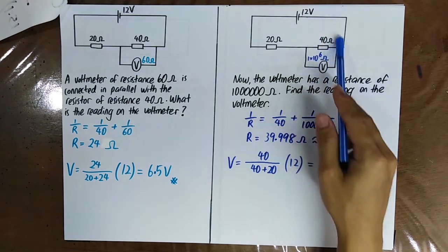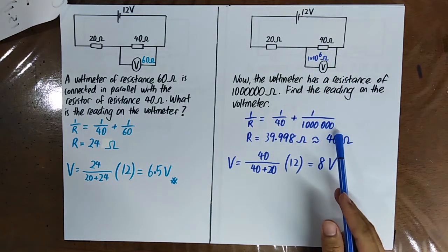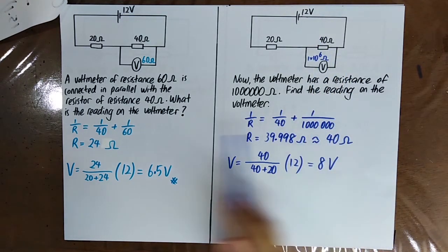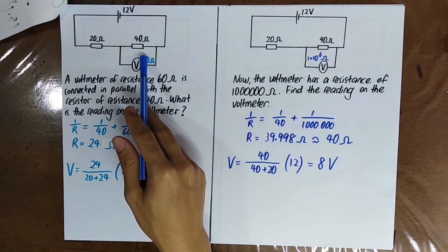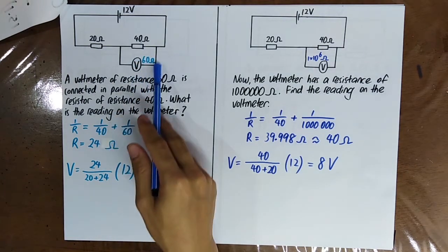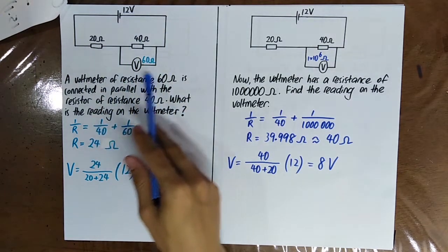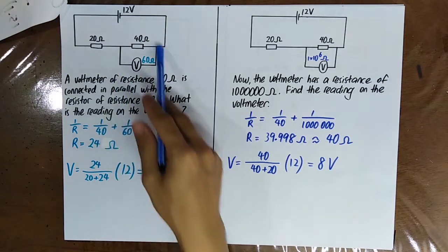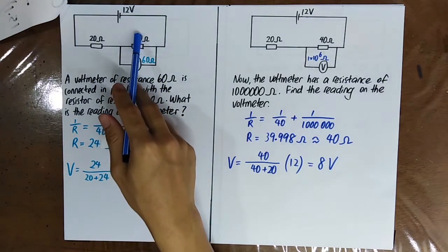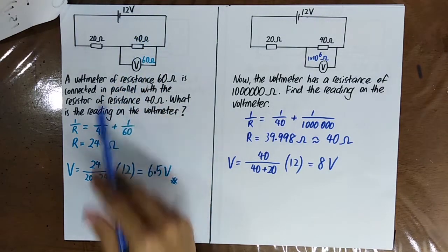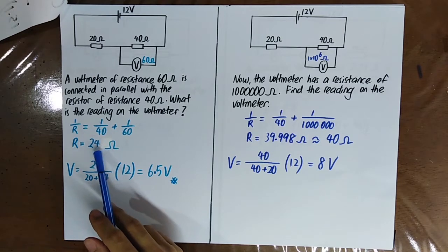That is, initially it's 40 ohm and then now it's still 40 ohm. But if the voltmeter has a very small resistance, the equivalent resistance drops — that is, initially it's 40 ohm and then now it drops to 24 ohm.